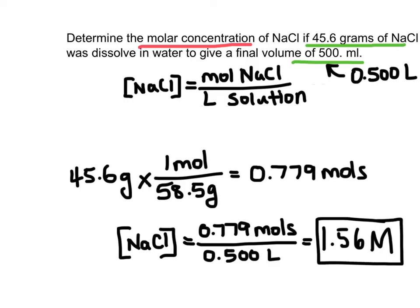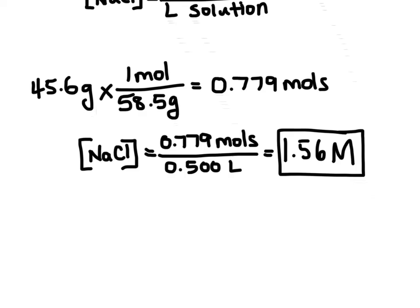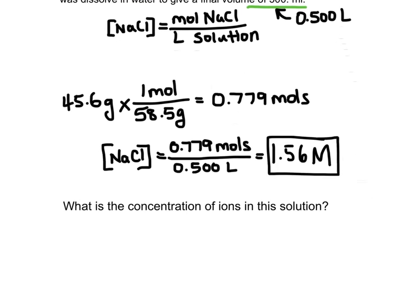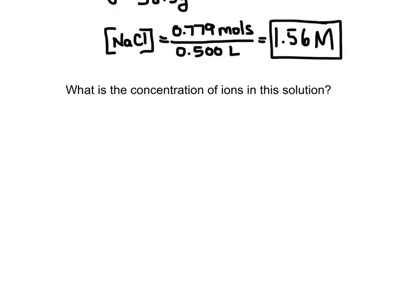Now we're going to take it one step further and suppose I were to ask, what is the concentration of ions in the solution? A lot of times we're concerned with the amount of individual ions, and the reason is because when ionic compounds dissolve, they split apart into their ions. Sodium chloride is made up of two ions, so when they split apart, we're going to have a sodium ion and a chlorine ion.